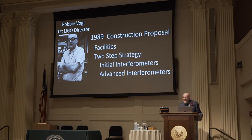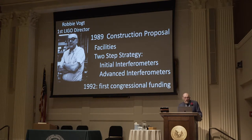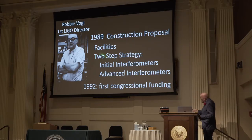This was kind of hard to get funded — you're going to build an astronomical facility that wasn't going to see anything, and then you're going to improve it. So it took us until 1992 to get the first congressional funding. Robbie Vogt led us through that whole process. Once NSF and Congress had bought in, we were backed with no major cuts in funding by the NSF and Congress, regardless of who was in power in Washington, from then until today. It's a remarkable tribute to NSF and to Congress that they backed this through two generations of interferometers.